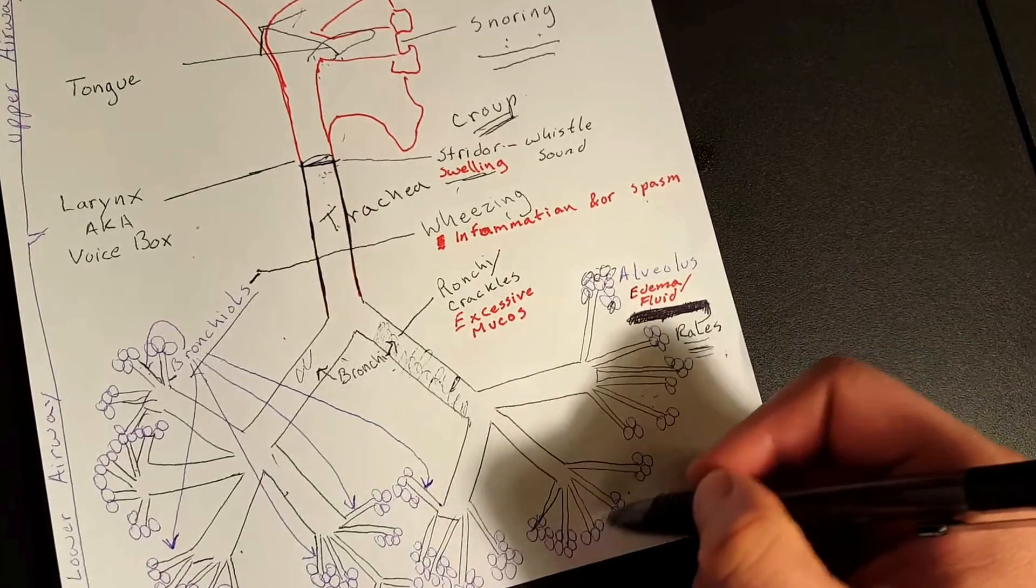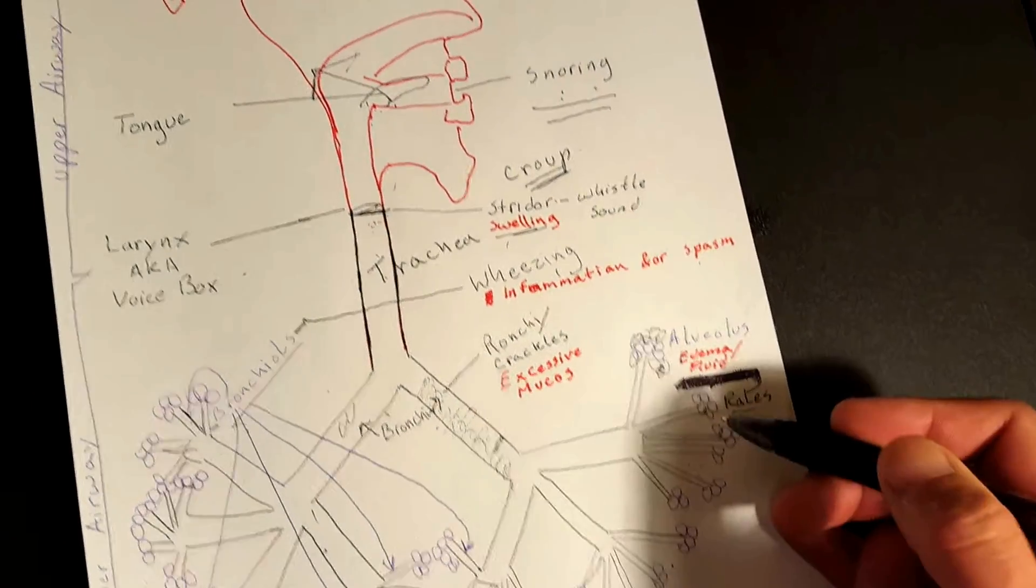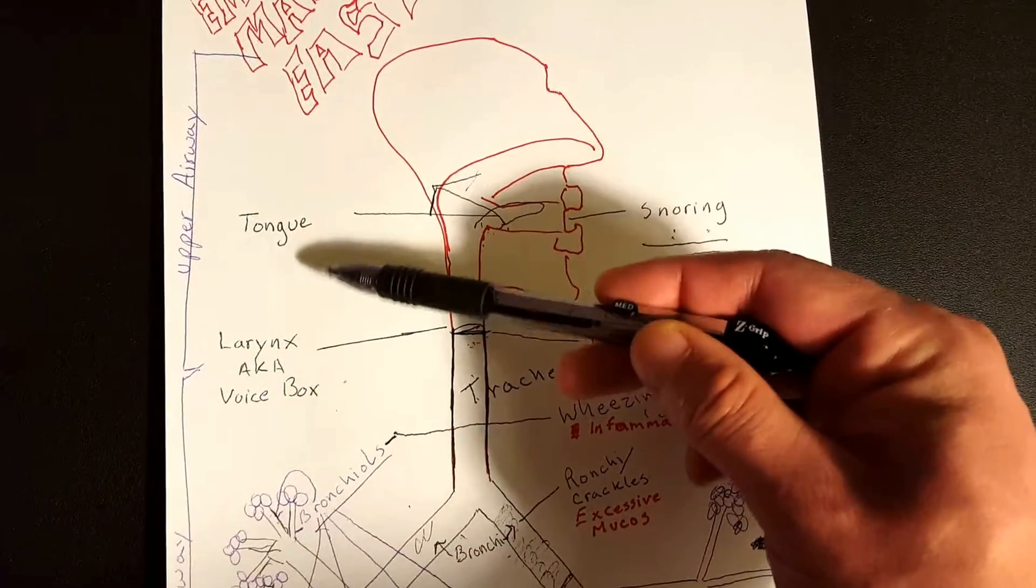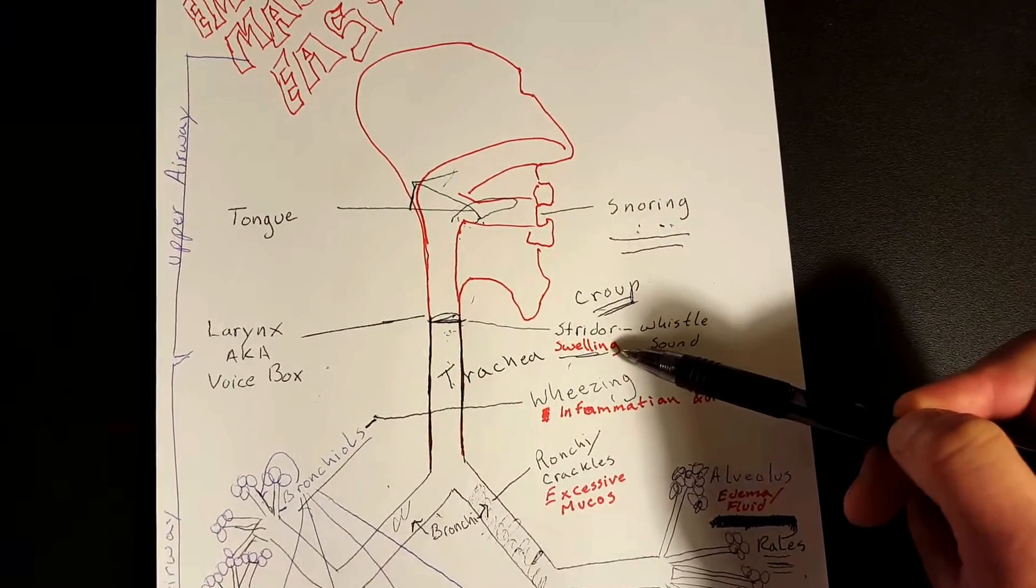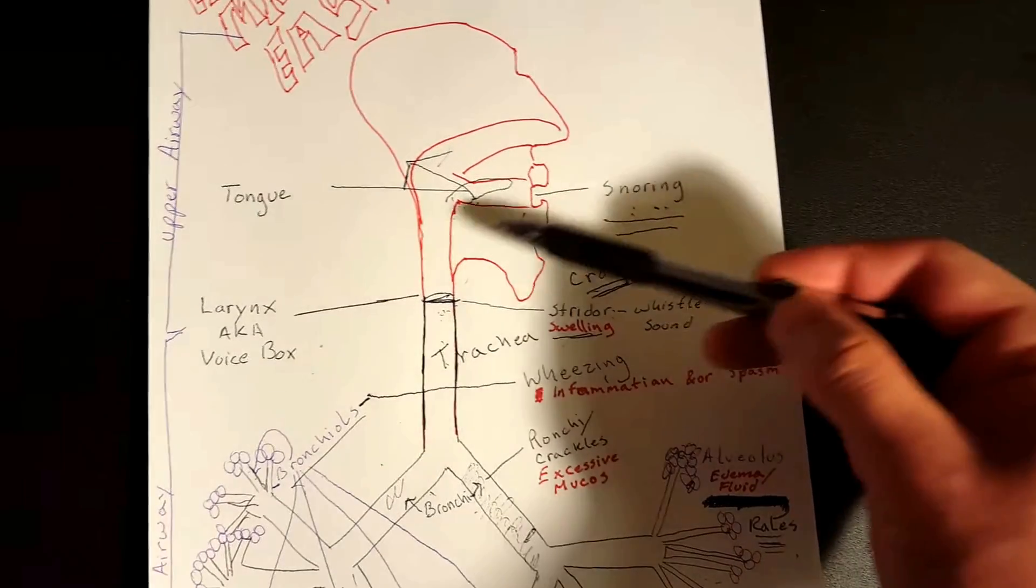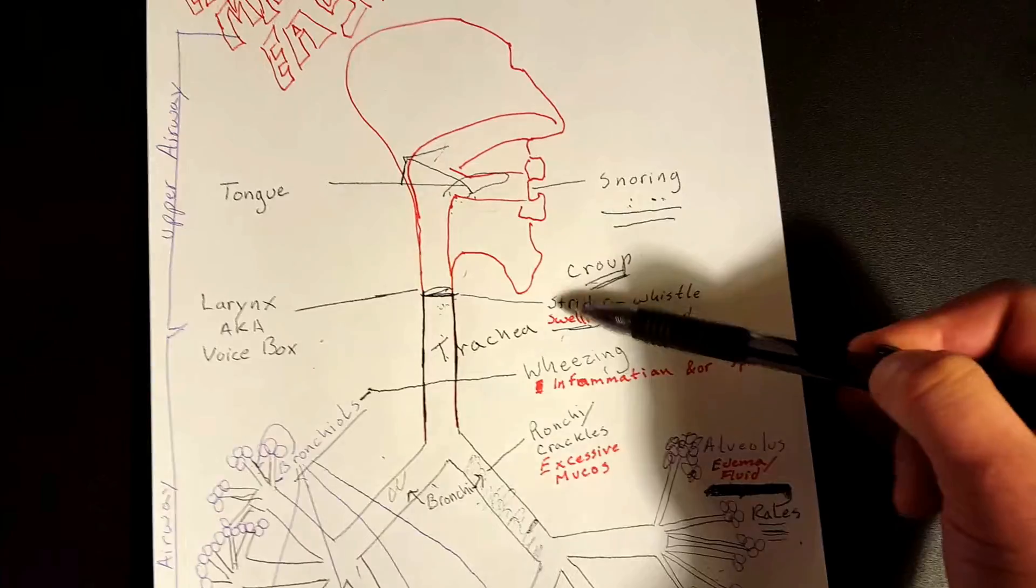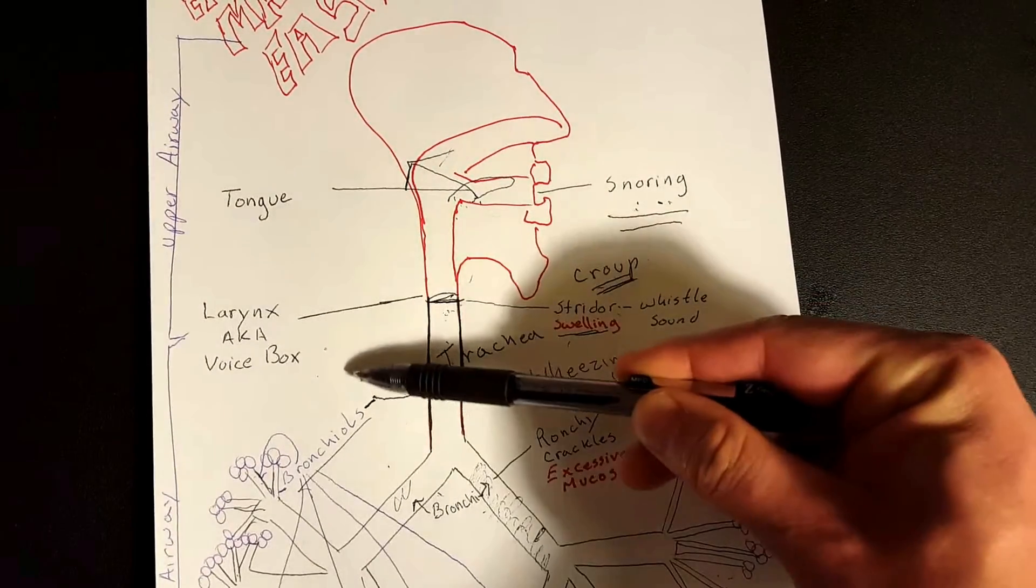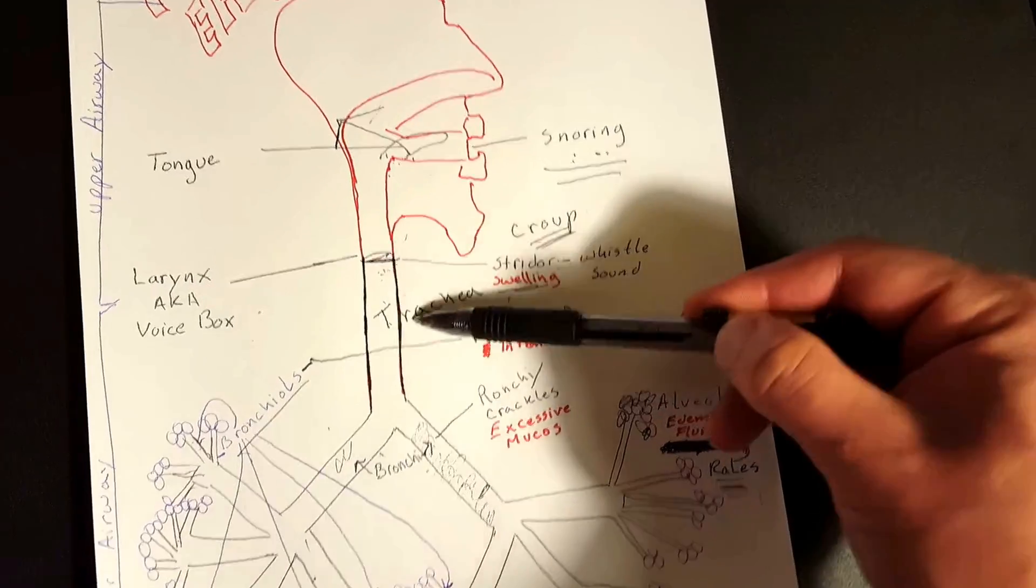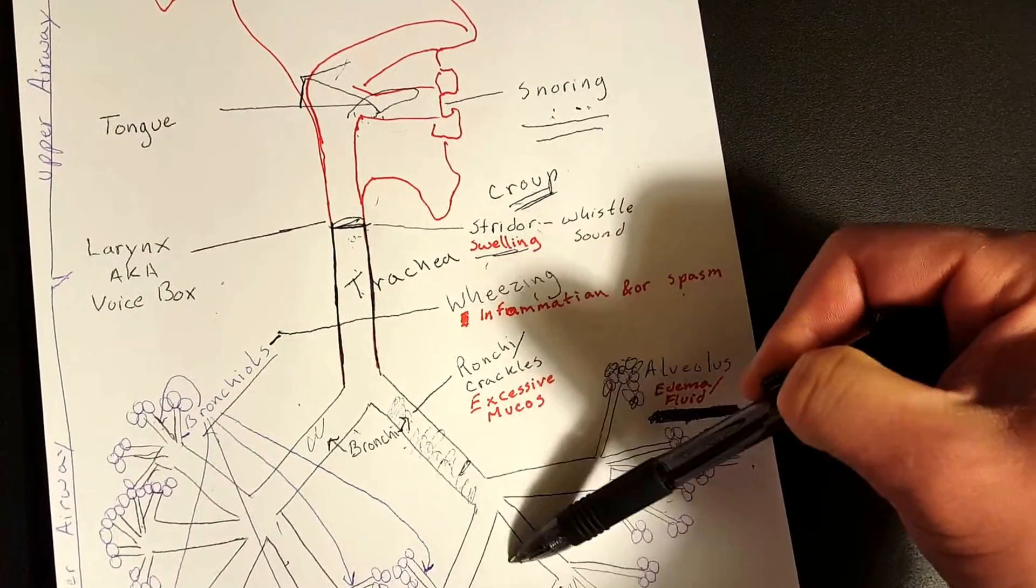So let's go ahead and just review real quick. Upper airway obstruction: two of them. You have snoring, stridor, and croup for children, for little toddlers, right? Snoring, you have a tongue issue. Stridor or croup, you have a larynx, aka voice box, issue.